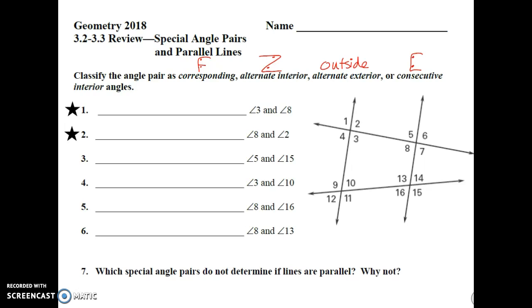And then the consecutive interior angles, those are the angles that make the C or the U. They will be between the lines and on the same side.